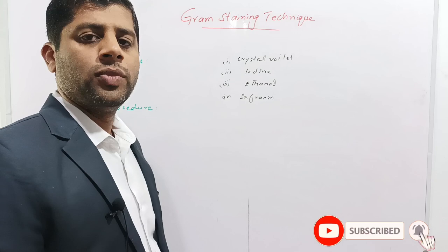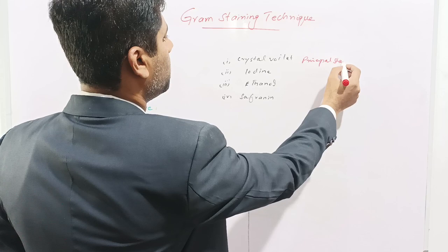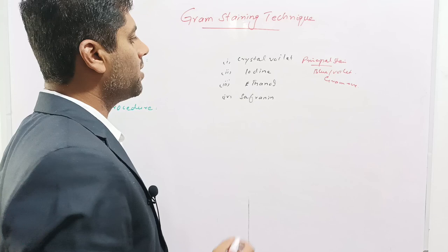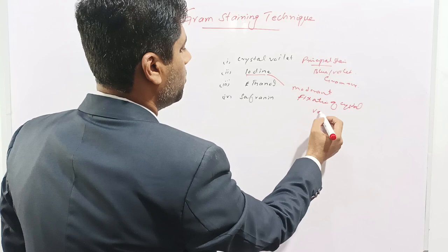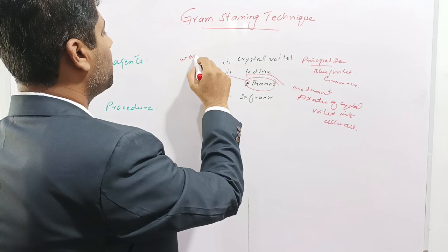Now, the reagents used in Gram staining. There are four reagents. The first is crystal violet, also called the principal stain. It imparts blue or violet color to the bacteria, and bacteria which retain this color are called Gram positive bacteria. The second reagent is iodine, called the mordant, used for fixation of the crystal violet stain into the bacterial cell wall. The third reagent is ethanol, used for washing off the excess crystal violet dye for approximately 20 seconds.